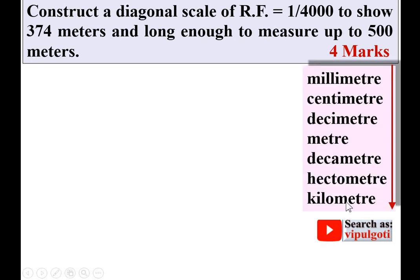Remember this important note: all units are in ascending order and each increases 10 times in that direction. In the examination, it may not say 'diagonal scale' directly — you may need to decide whether it is a plane scale or diagonal scale. From the data, 374 meters breaks into 4 meters, 7 decameters, and 3 hectometers — three units — so you must use a diagonal scale. A plane scale only handles 2 units.